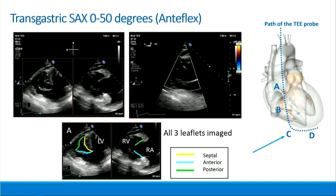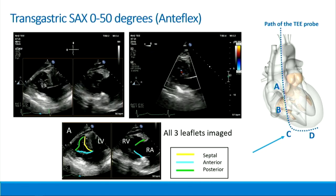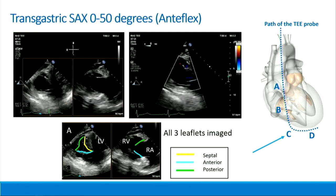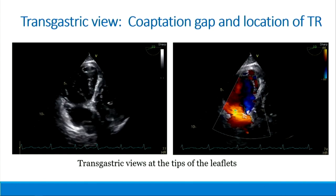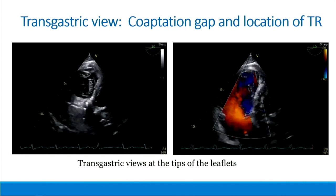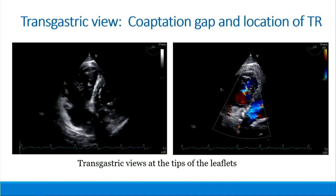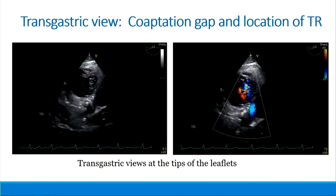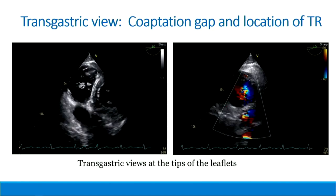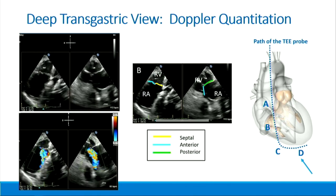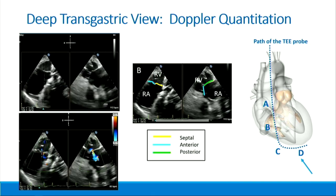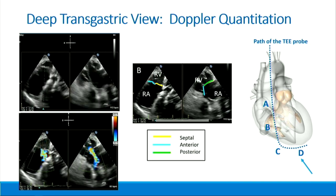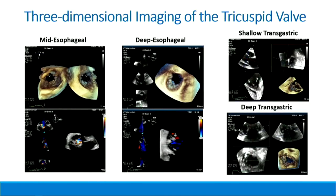The transgastric views also allow us to get closer to the tricuspid valve. The shallow transgastric is the one view where you can see on two-dimensional imaging all three leaflets at the same time. We use this short axis view to image the leaflet tips and the coaptation gaps, particularly when assessing patients for edge-to-edge repair. The deep transgastric views are needed for any kind of Doppler quantification, as we are frequently off-axis, and allow us to get the essential apical views of the tricuspid valve.